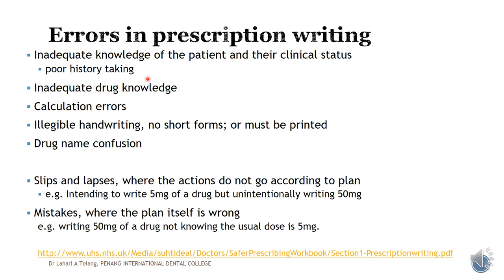Inadequate drug knowledge — not knowing much about the medication itself without doing your background reading — can lead to wrong prescriptions. Calculating errors, especially for child dosaging, are another concern. Illegible handwriting or use of short forms — if any of these apply, it's better to print your prescription so it is very clear. Having drug name confusions can be very embarrassing; there is always a drug index you can refer to, available in clinics or online at mims.com — the Malaysian drug index.